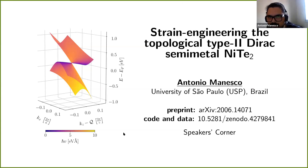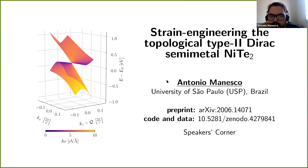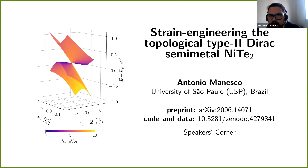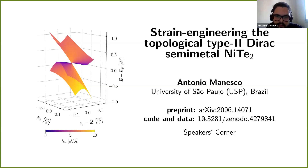All right, let me slowly start the presentation. So this is work we've done about strain engineering on a topological type 2 Dirac semimetal, which is nickel cobalt ditelluride. You can also check our preprint here, and if you are interested, you can also take a look at the code and the data we used to produce this paper in this repository.